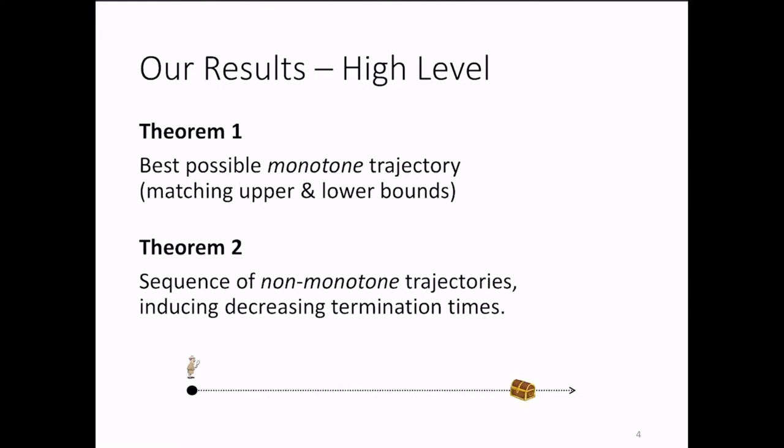In theorem number two, we design a sequence of non-monotone algorithms, each deviating more and more from being monotone, and which induce improved performance. Therefore, as a corollary, we also obtain that monotone algorithms are not optimal for searching the half-line with a probabilistically faulty searcher.